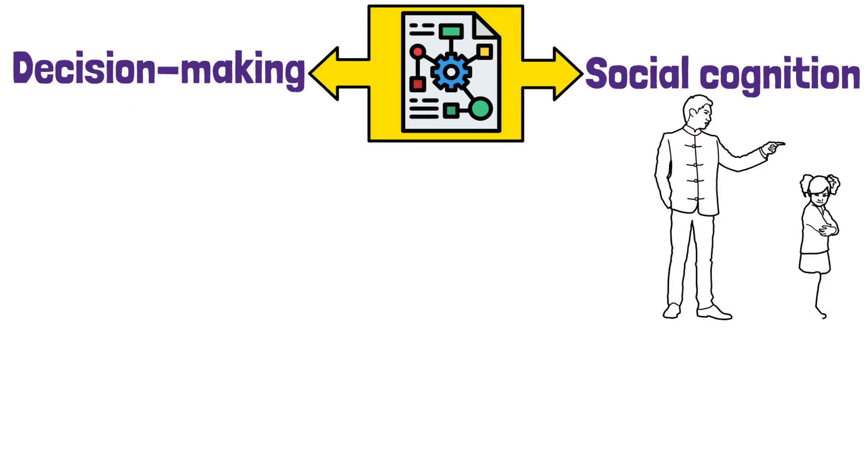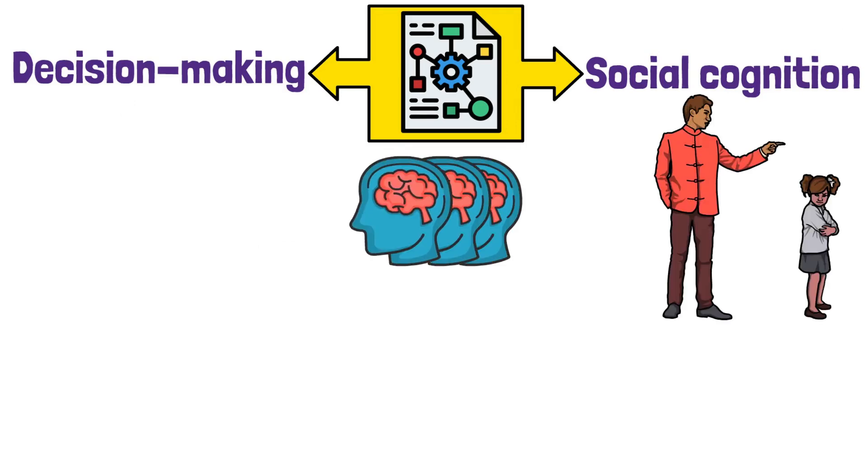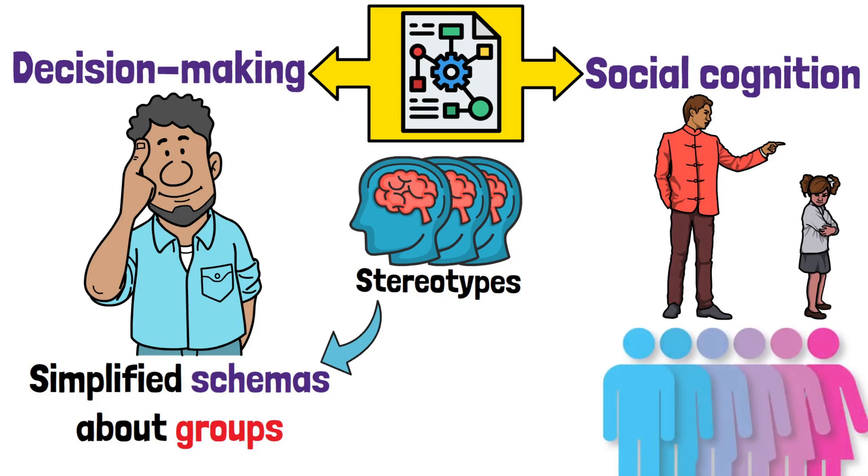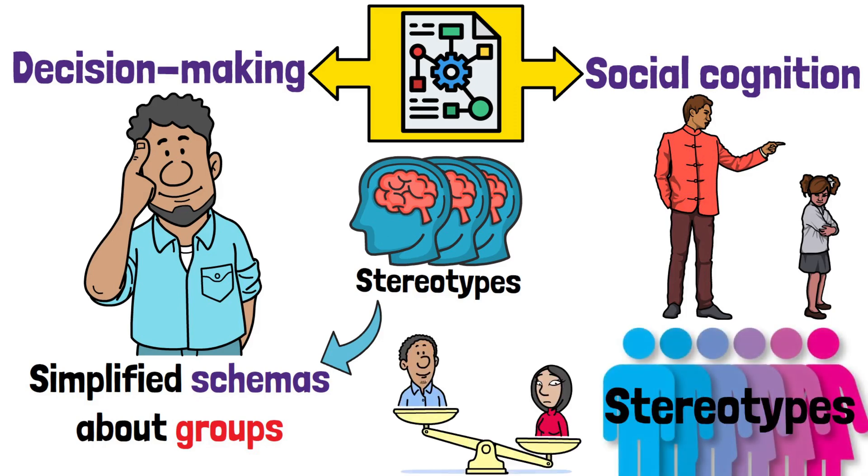Schemas also play a role in decision-making and social cognition. They affect how we interpret others' behavior, often through stereotypes, which are simplified schemas about groups. While schemas enable efficient thinking, they can also perpetuate stereotypes, leading to biased judgments.